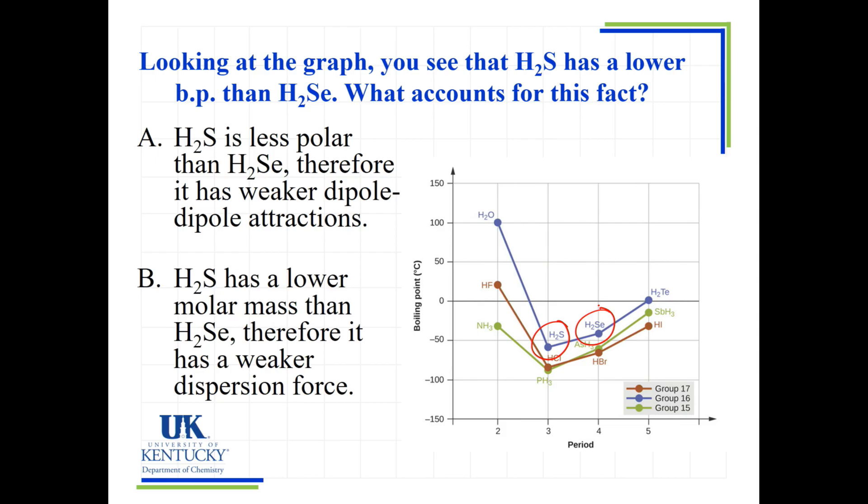Now, this is not an argument of hydrogen bonding because it doesn't meet the criteria. This is a review question of something we've covered earlier. What accounts for the fact that H2S is lower than H2Se?